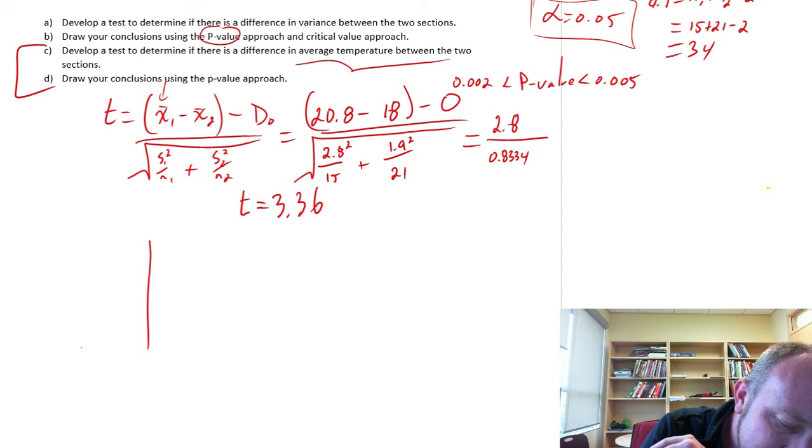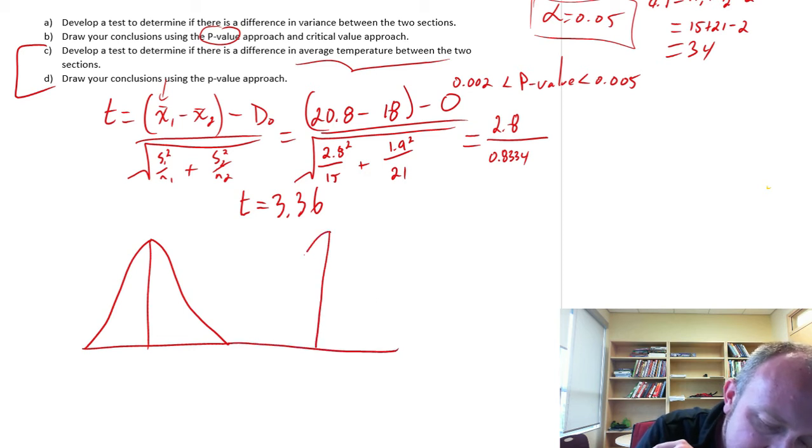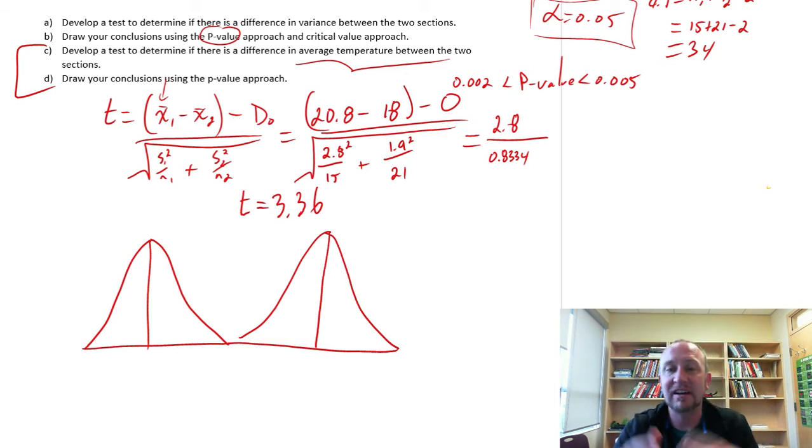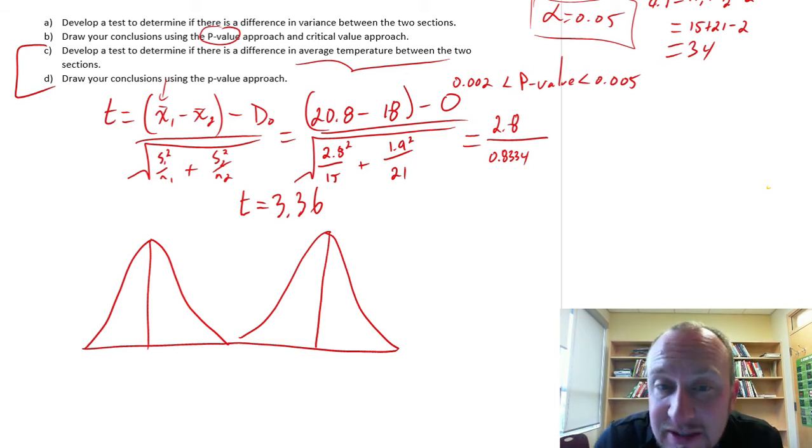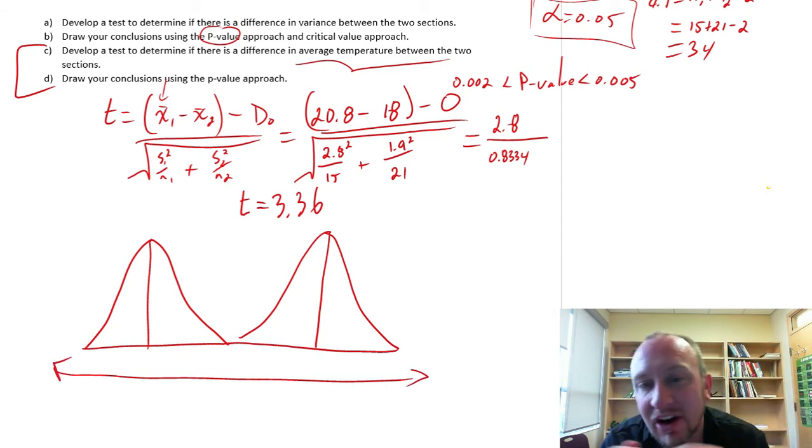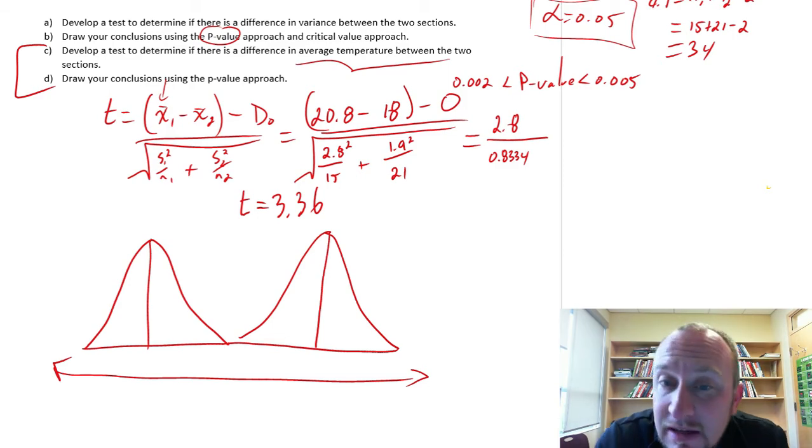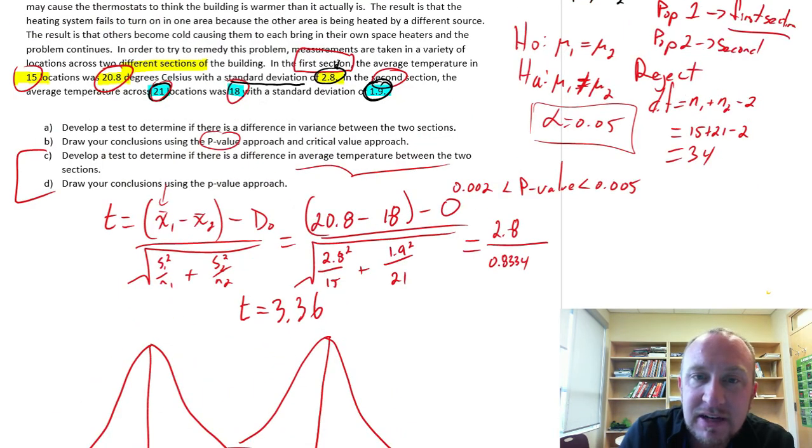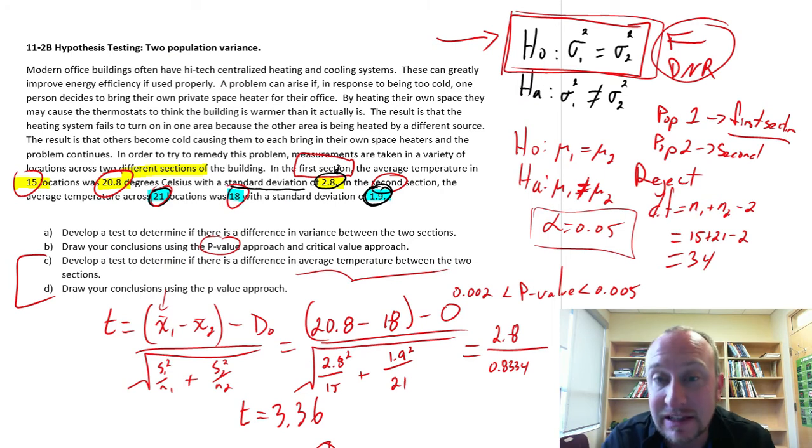So effectively what we have done, let me just give myself a little bit more space here, is we found that we have two distributions, their shapes are the same but they're in different locations. So both of our variances, I can't say that they're different from each other, so the shapes of these two distributions are for all intents and purposes the same, but their location is different on the number line, they are not in the same position.